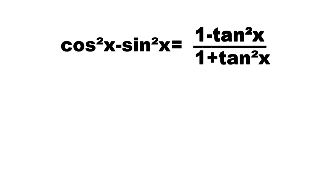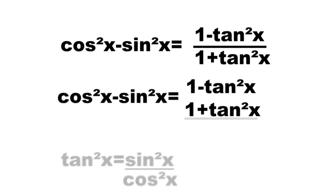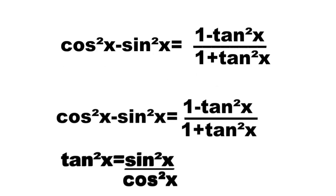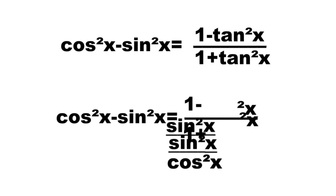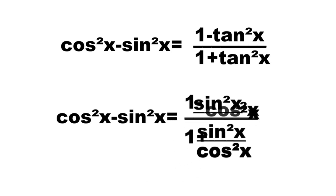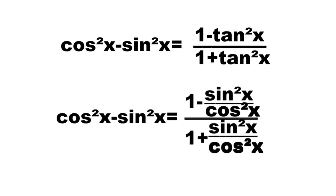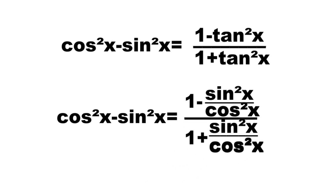By quotient identities, we have tangent squared x is equal to sine squared x over cosine squared x. By substituting, we have 1 minus sine squared x over cosine squared x, all over 1 plus sine squared x over cosine squared x.